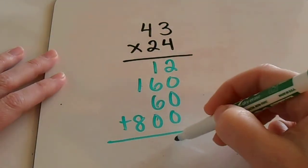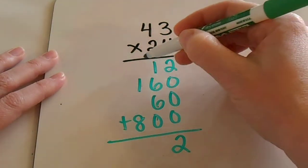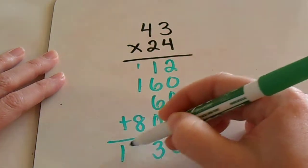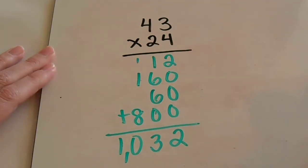Add all of those numbers up. 6 plus 6 is 12. Plus 1 more is 13. 8 plus 1 is 9. Plus 1 more is 10. To get 1,032.